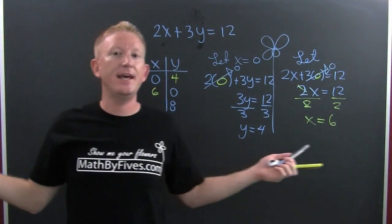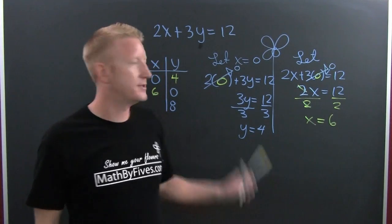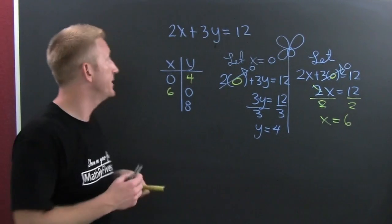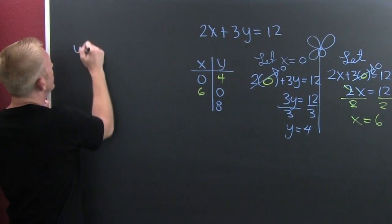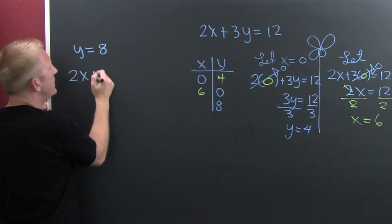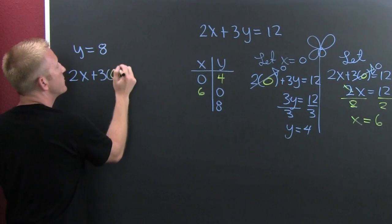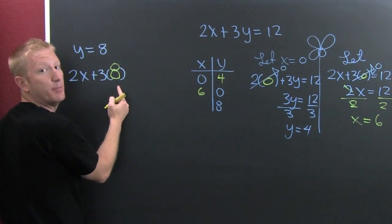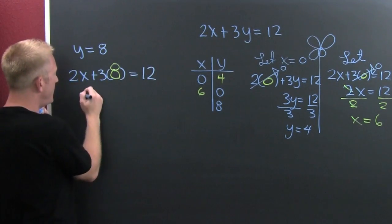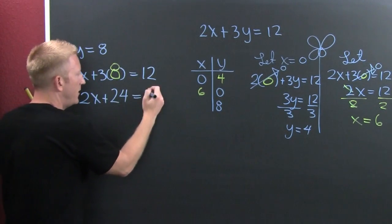But what about the next example? They weren't looking for the x and y-intercepts in this table. So let's clear our mind and go for that next example. We're talking about what happens when y is equal to 8. I'm going to plug it in. This time y is not 0 — y is 8. So then this gives us 2x plus 3 times 8, which is 2x plus 24, is equal to 12.